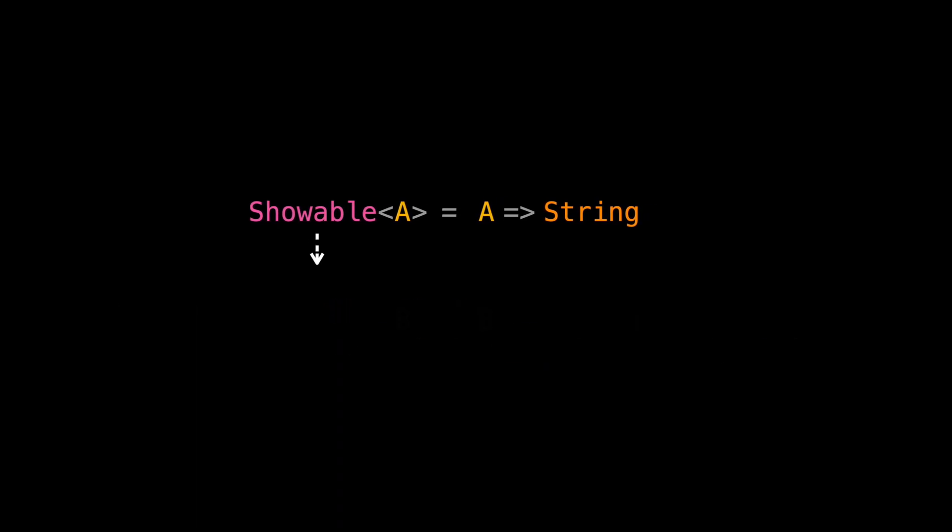Alright, let's try to see if Showable structure is functor, or more precisely, covariant functor. We do that by checking if we can convert Showable A to Showable B using function F from A to B. But no matter how much you try, you see that this is not possible. This would have been possible if our function was from B to A, right?